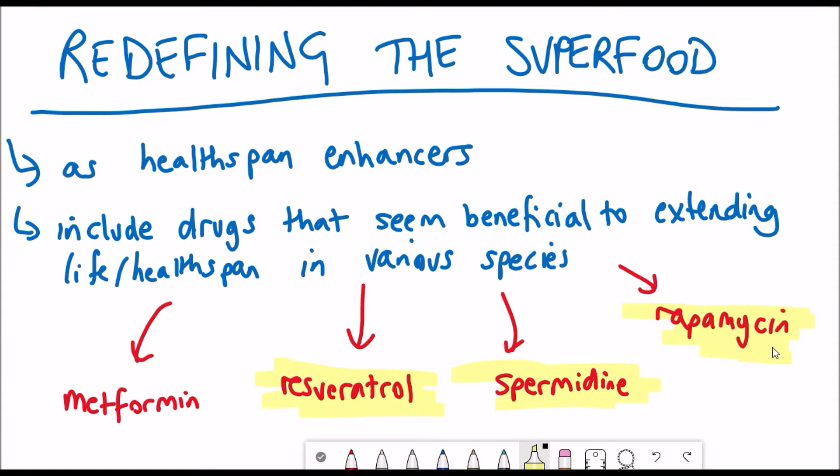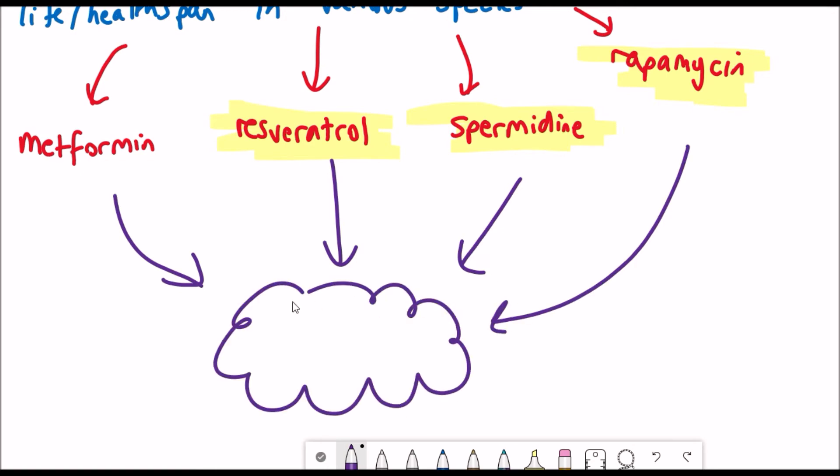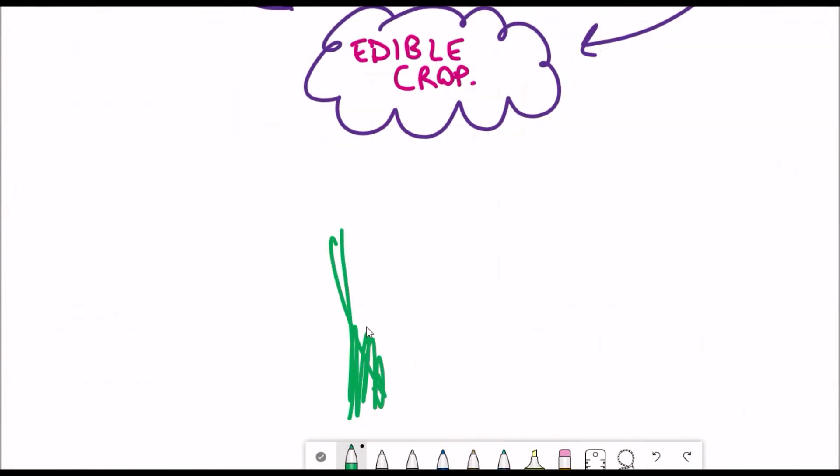The latter three are produced naturally from different biological sources, but incorporating them into the synthesis of edible crops simultaneously at various concentrations, or using chemical derivatives of the drugs or novel drugs yet to be discovered, would enable the crops to be distinguished from currently available superfoods.